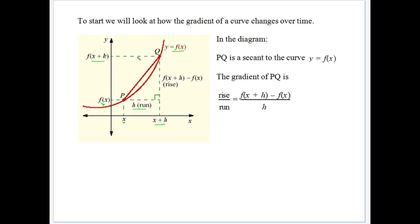We're substituting x plus some number into the function as well. We get our gradient as the derivative — this difference: f(x + h) minus f(x), over h, because x plus h minus x gives us just h. So there's our gradient of our secant, which is the rise over the run — the difference in the y values over the difference in the x values — written in terms of function notation.